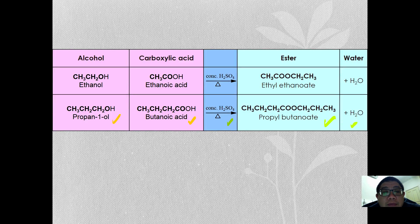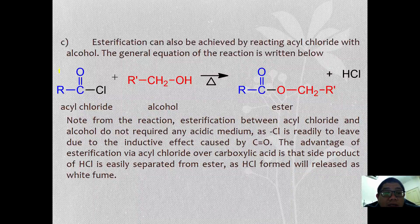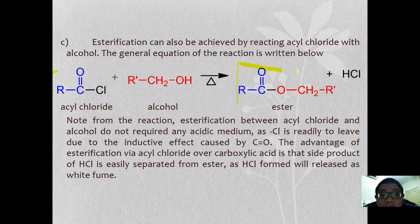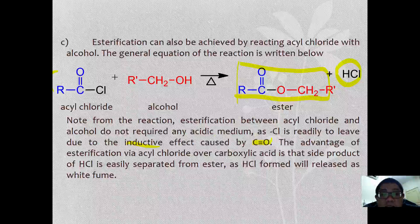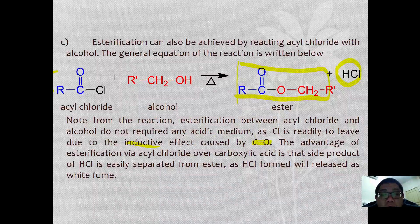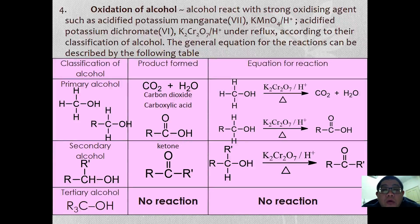Esterification can also be achieved using acyl chloride. The general equation still produces an ester, but the side product is HCl, observed as a white fume that is readily released. The reaction between acyl chloride and alcohol requires milder conditions because the inductive effect of the C=O double bond makes the Cl a better leaving group. Further details will be discussed when we cover carboxylic acid derivatives.